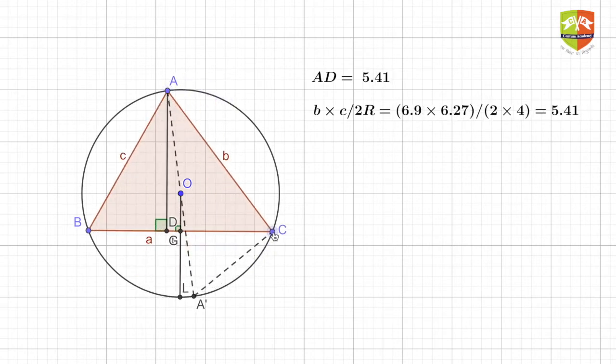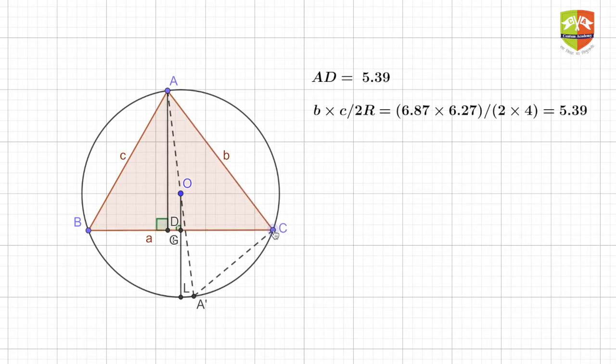So the length of the altitude is equal to the product of the adjacent sides, right? For example, AD is the altitude, so the adjacent sides in this case will be c and b. So product of these two divided by two times the circumradius, that's what is the theorem. Let's try to prove this theorem now.